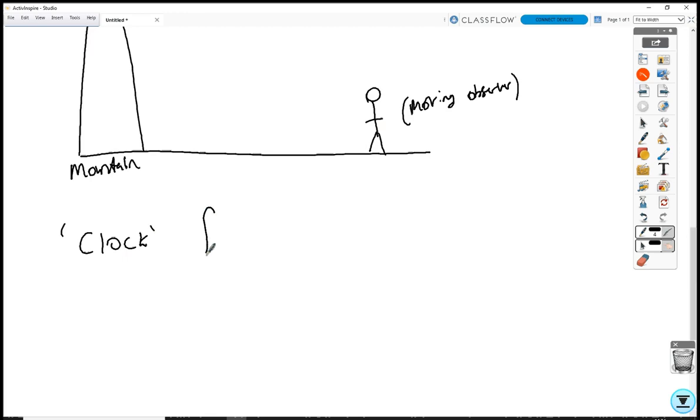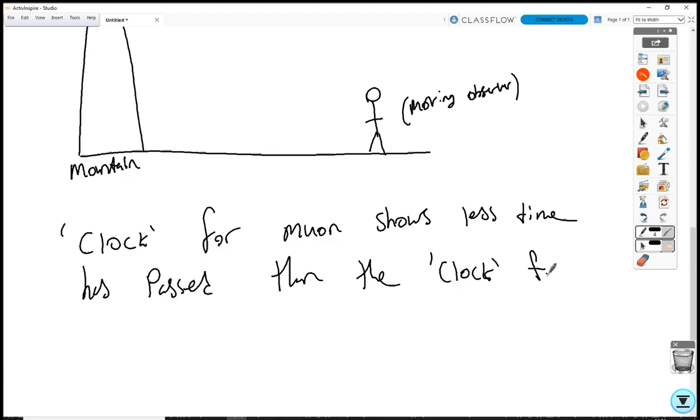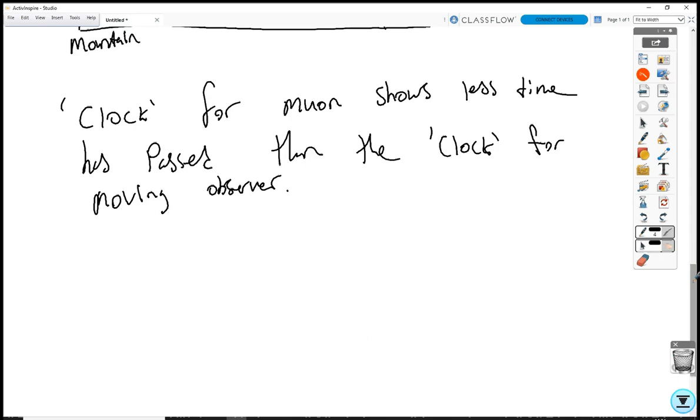The clock for muon shows less time has passed than the clock for moving observer. The observer expects that most of these muons should have decayed by the time they reach the bottom. But actually, what they find is that most of these muons actually make it to the bottom without having decayed yet.